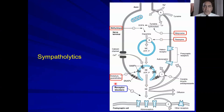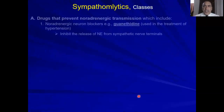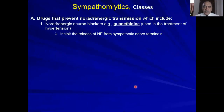All of these drugs are used for treatment of hypertension. Adrenergic receptor blockers are drugs that block the alpha or beta receptors and prevent adrenaline or noradrenaline from binding to these receptors. Now we'll go into more details about these two classes.